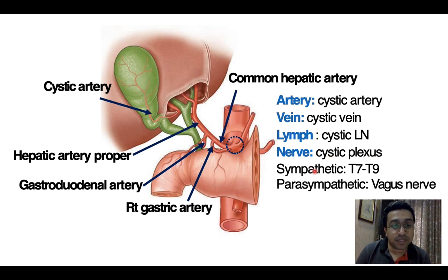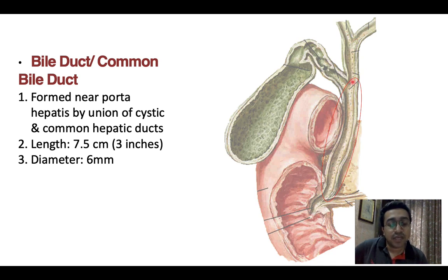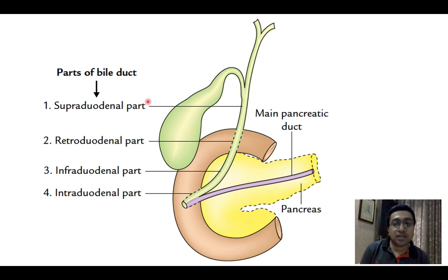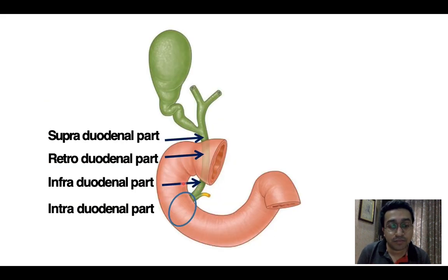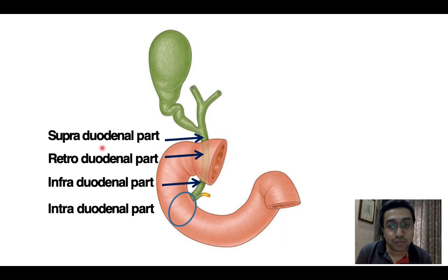Now moving on to the bile duct or common bile duct. It is formed near the porta hepatis by the union of the cystic and common hepatic ducts. Its length is 7.5 centimeters (roughly 3 inches) and diameter is 6 mm. There are primarily four parts: the supraduodenal part, retroduodenal part, infraduodenal part, and intraduodenal part, which can be seen clearly in the diagram.